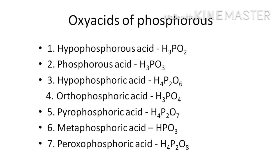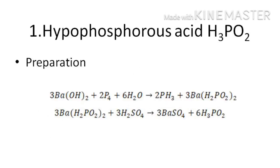The important oxoacids are: hypophosphorus acid, phosphorous acid, hypophosphoric acid, orthophosphoric acid, pyrophosphoric acid, metaphosphoric acid, and peroxophosphoric acid. Now let's discuss each one in detail.